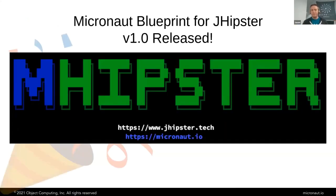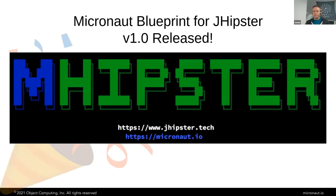We just had the 1.0 release of mHipster, which is the informal name of the Micronaut Blueprint for JHipster. This was a lot of work and a lot of collaboration between the great folks in the JHipster community, the Micronaut Foundation, and Object Computing. I'm really happy about this release and proud to have been a part of it. I'll pass it off to Frederick for an introduction to JHipster.